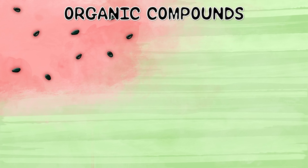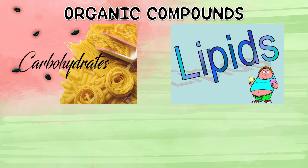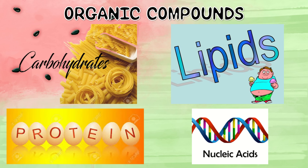There are four main types or classes of organic compounds found in all living organisms. These are carbohydrates, lipids, proteins, and nucleic acids. In addition, there are other organic compounds that may be found in or produced by some organisms. All organic compounds contain carbon, usually bonded to hydrogen. Let's explore more about these compounds.